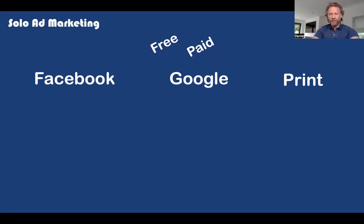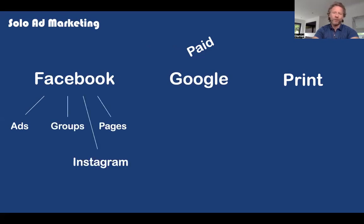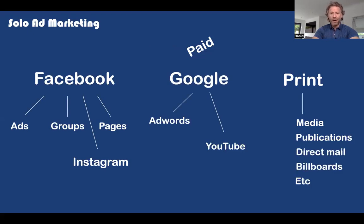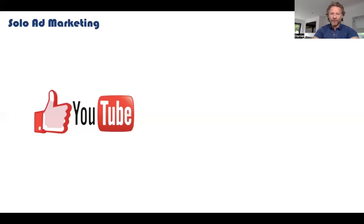And if you're in print, you can get into publications, maybe places that you've worked, people you've worked with. And on the paid side, you've got Facebook ads, groups, pages, Instagram. On the Google side, you've got AdWords and YouTube. And on the print side, you've got print media, publications, magazines, newspapers, direct mail, billboards, and all that stuff.